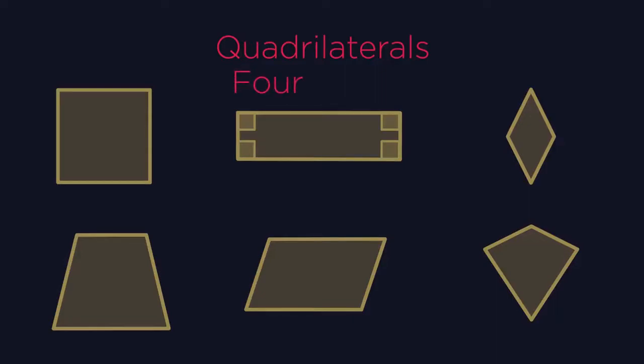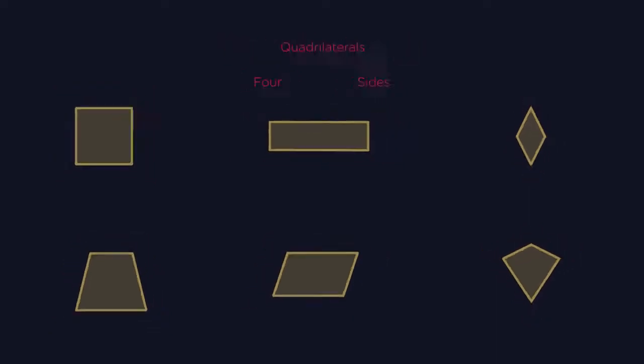Quad means four, laterals means sides. In this video we're going to look at the properties of quadrilaterals in more detail.